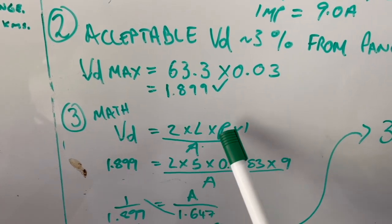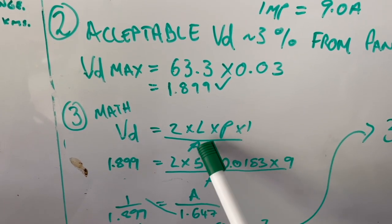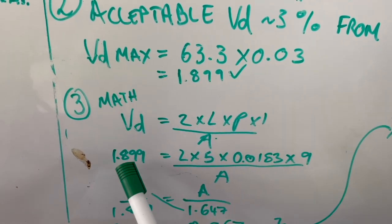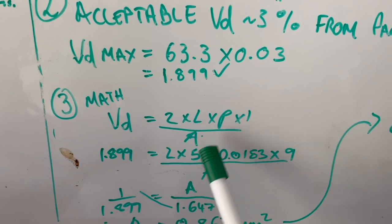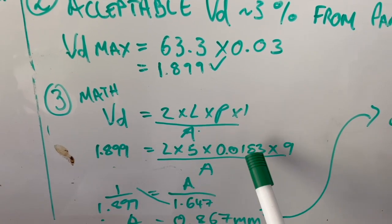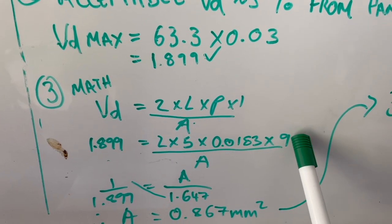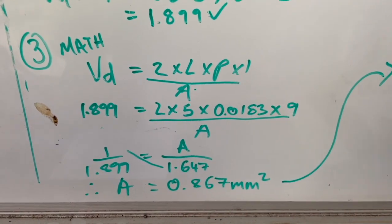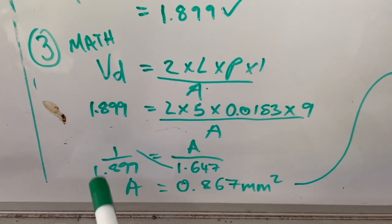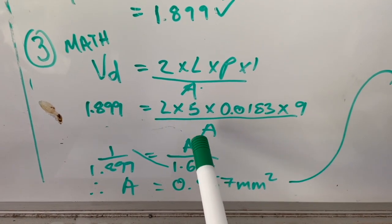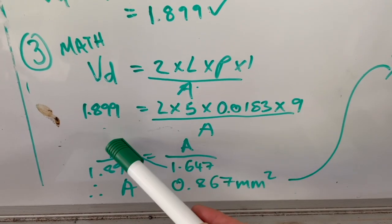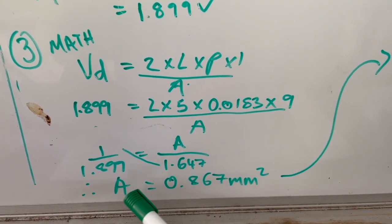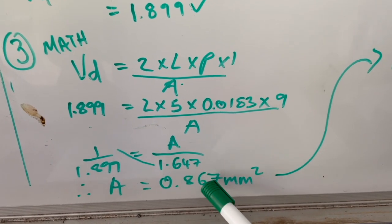Now it's just math, grab that formula. VD equals 2 times L times Rho times I over A. Plug in the numbers, so we've said voltage drop accepted is 1.899. We know all those figures. 2 times 5 times by resistivity times by max of amp is 9 over A. Go to some quick math, flip both sides. So it's 1.647 divided by 1.899 equals area equals 0.867 millimeters squared.